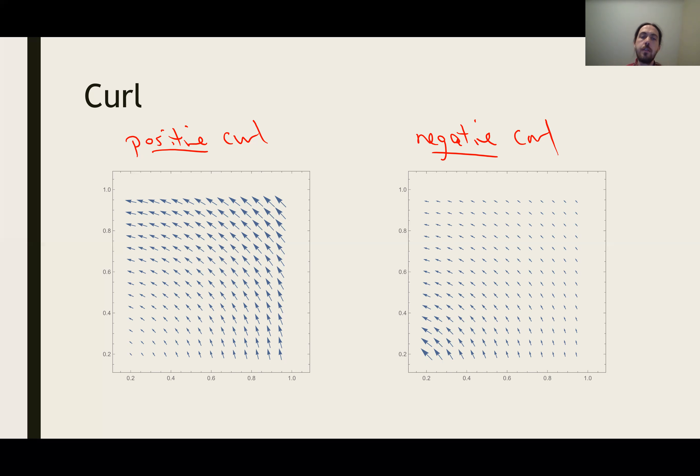But curl is local. We have to imagine that we're stuck at some kind of position inside these vector fields. And we're asking, is the vector field rotating us more clockwise or is the vector field rotating us counterclockwise?